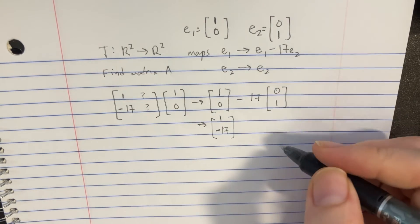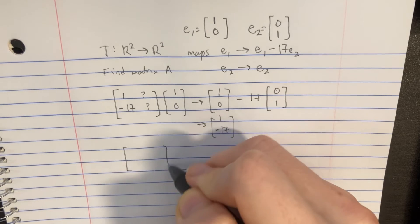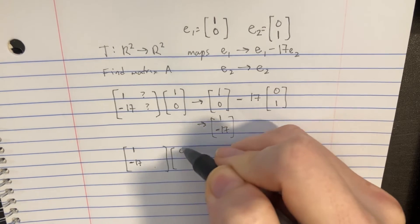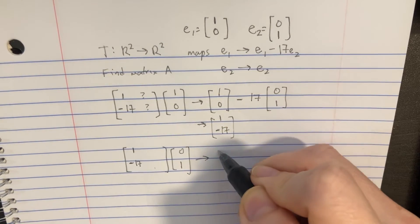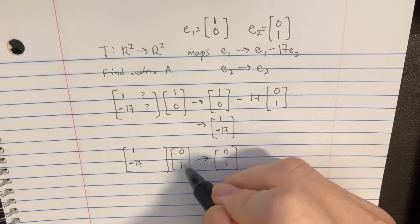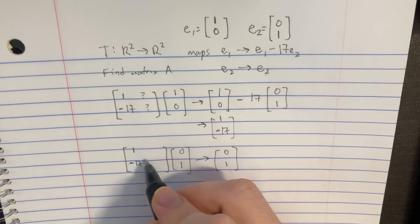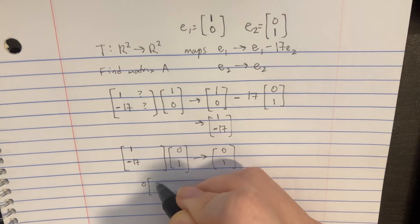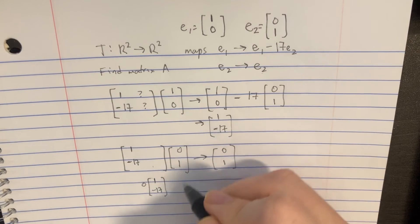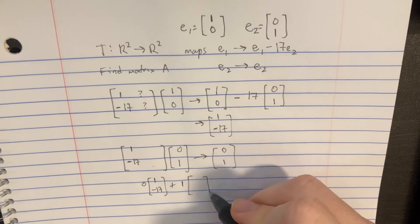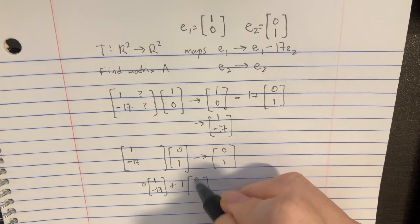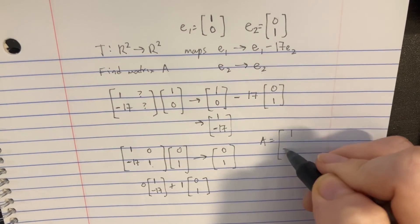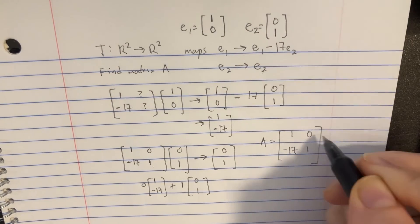Now let's figure out what the second column would be by plugging in E2, which is [0, 1]. This one is going to transform into the same vector, E2 again — we're just transforming E2 into E2. The zero cancels out the first column, so we get 0 times [1, -17] plus 1 times whatever we put in the second column, which gives us [0, 1]. So matrix A is [[1, 0], [-17, 1]]. And there we go.